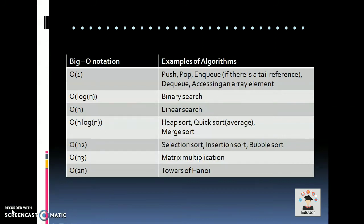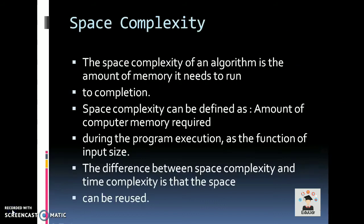Here are some examples of algorithms: push, pop, enqueue, dequeue, and accessing an array element have time complexity O(1). Binary search has O(log n). Linear search has O(n). Heap sort, quick sort, and merge sort have O(n log n). Selection sort, insertion sort, and bubble sort have O(n²). Matrix multiplication has O(n³), and towers of Hanoi has O(2^n).